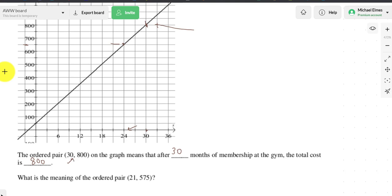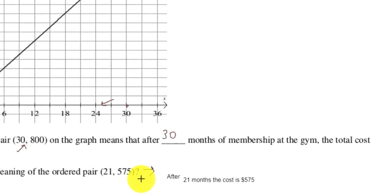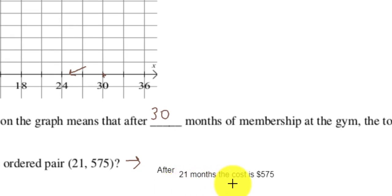The meaning of the ordered pair 21 comma 575. I'm going to try and use my typewriter tool. That means after 21 months, the cost is, I think it says 575. After 21 months, the cost is $575. I hope that helps.